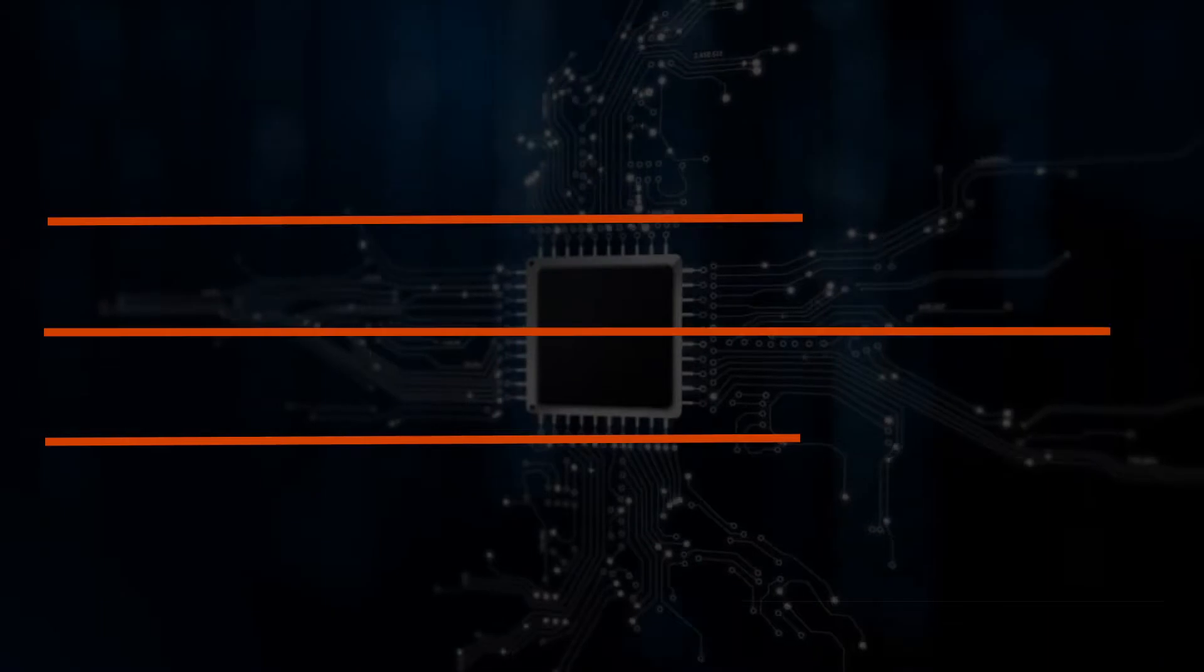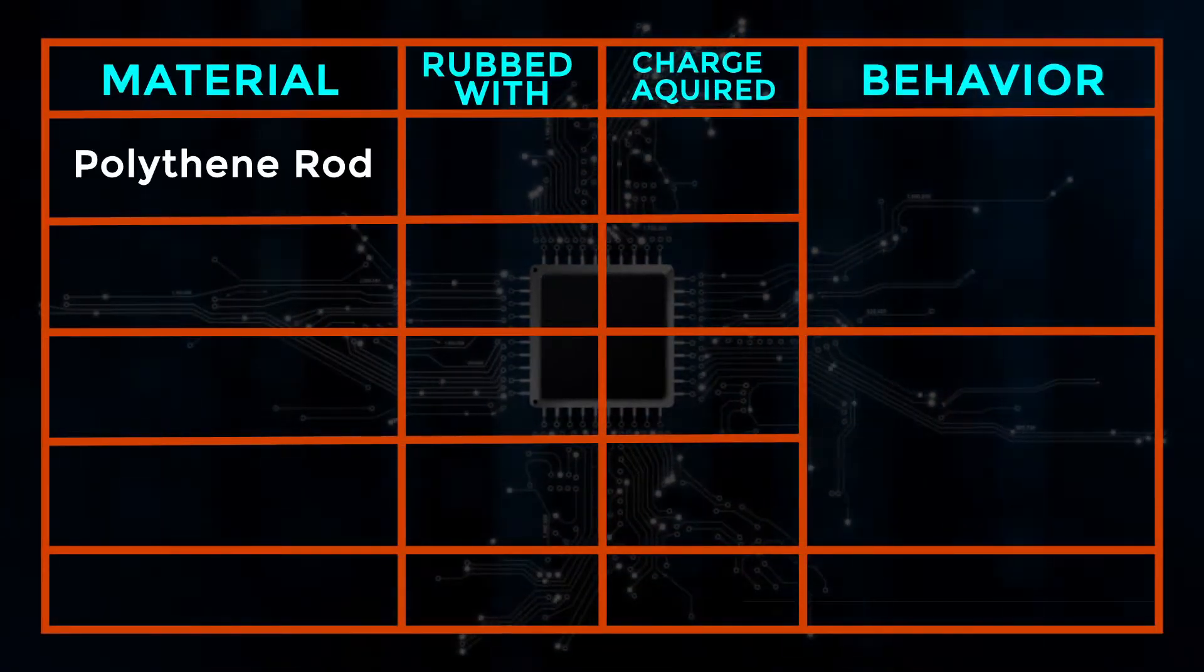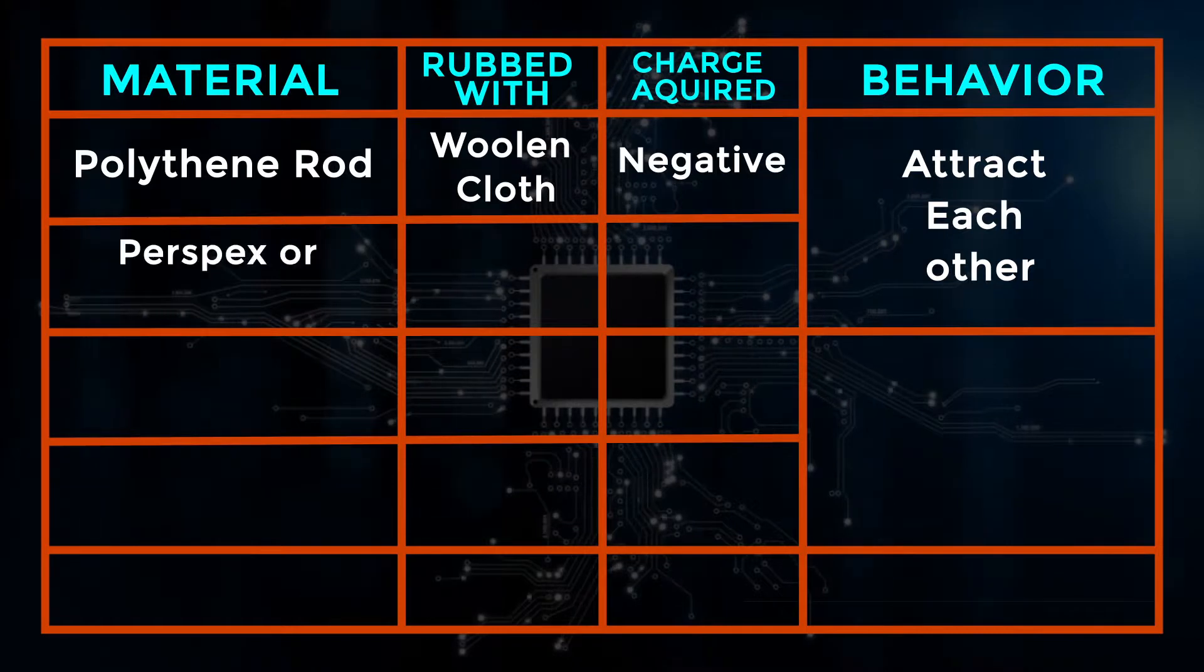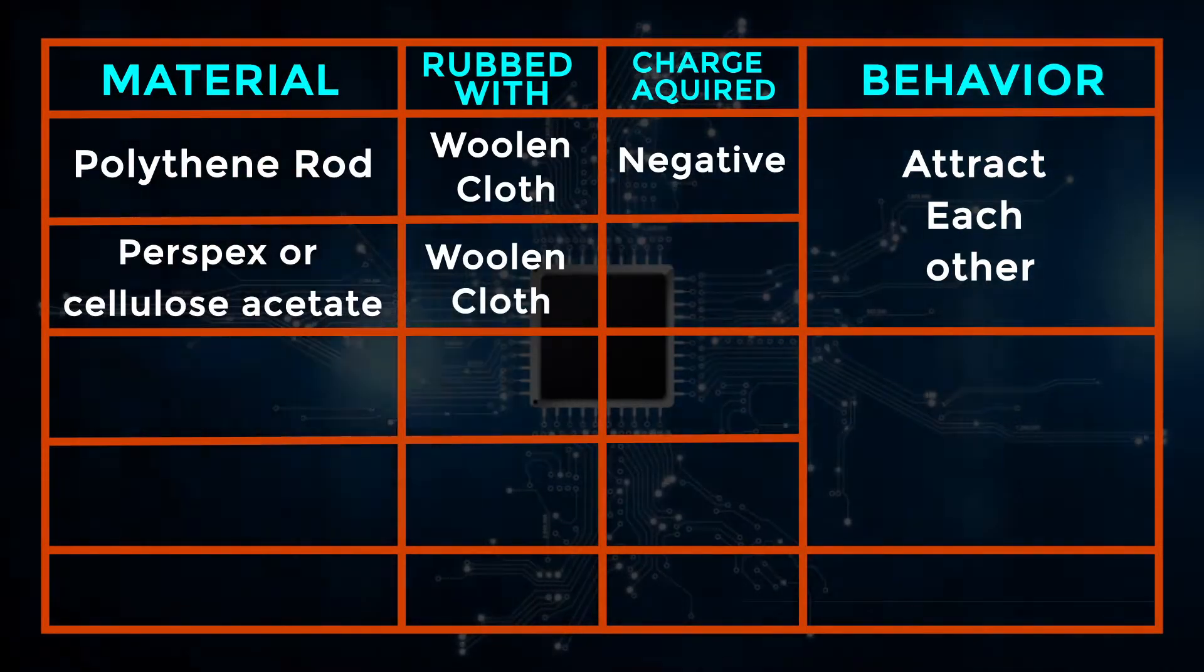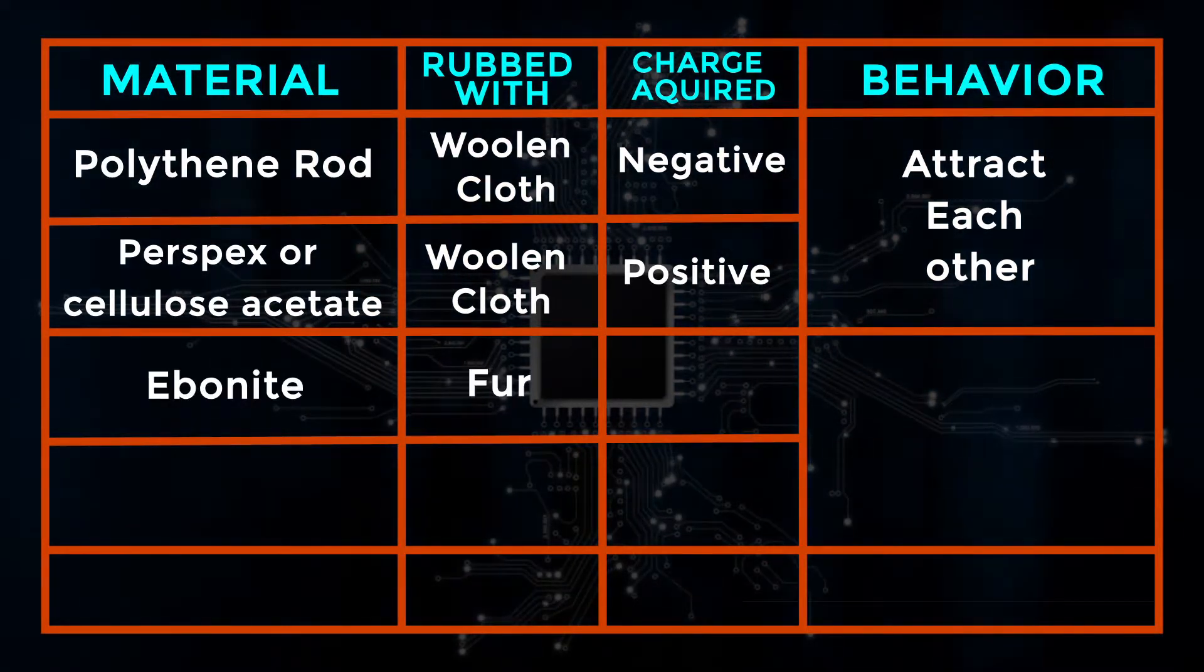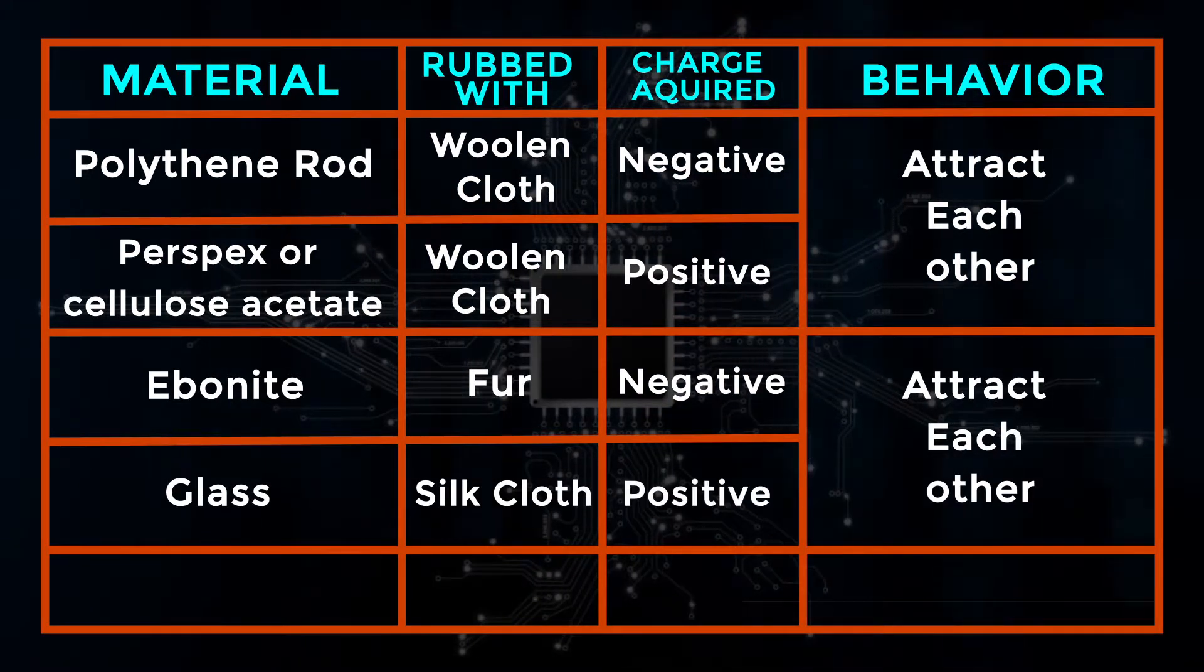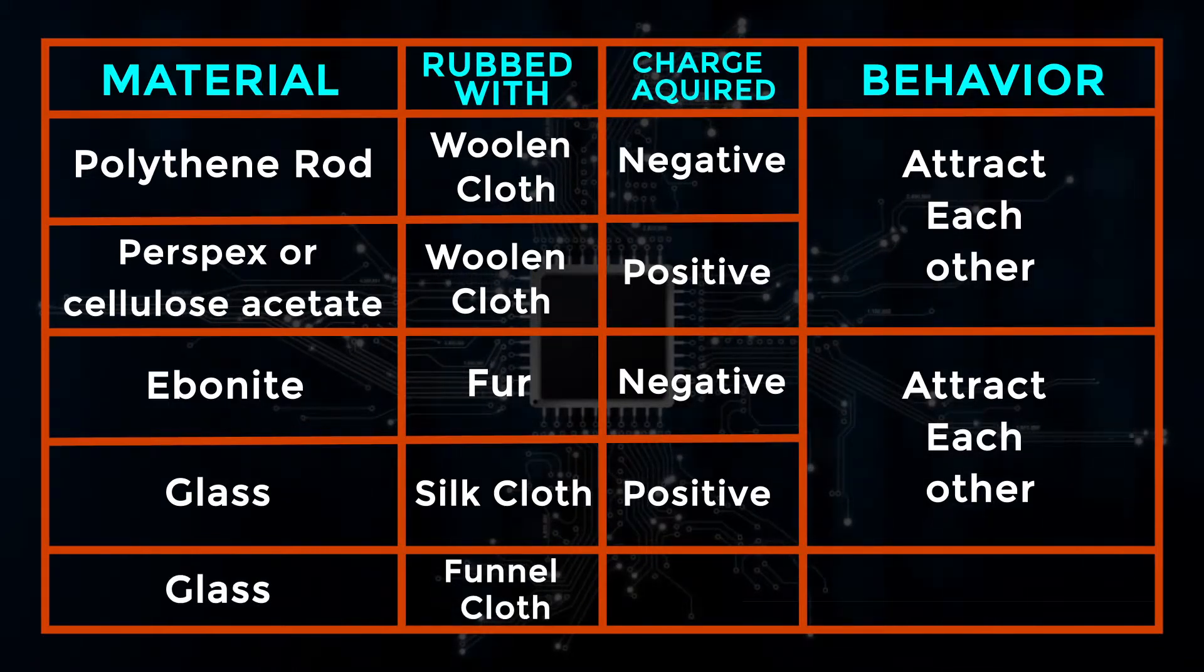See the table for different examples that create static electricity by rubbing: polythene rod rubbed with woolen cloth becomes negatively charged. Perspex or cellulose acetate rubbed with woolen cloth becomes positively charged. Ebonite rubbed with fur becomes negatively charged. Glass rubbed with silk cloth becomes positively charged. Glass rubbed with flannel cloth becomes negatively charged.